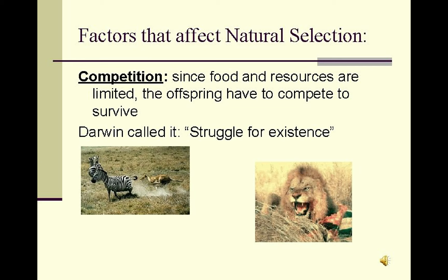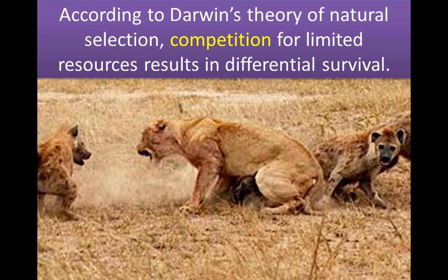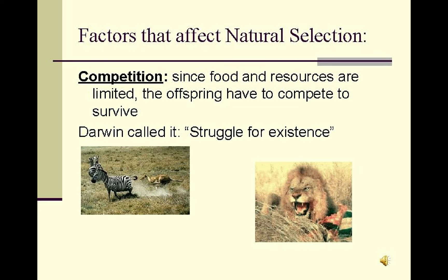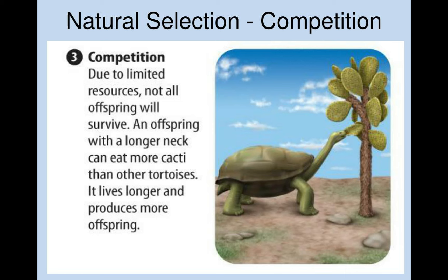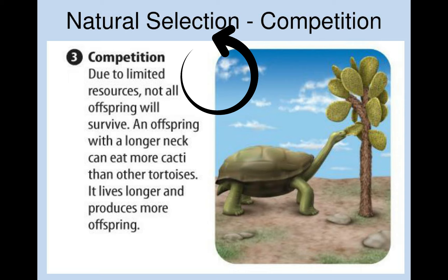When there is a change in environmental conditions or when there is competition, organisms with favorable characteristics that make them more suited and more adaptable will survive, whilst organisms with characteristics that make them less suitable will die. This is termed natural selection.